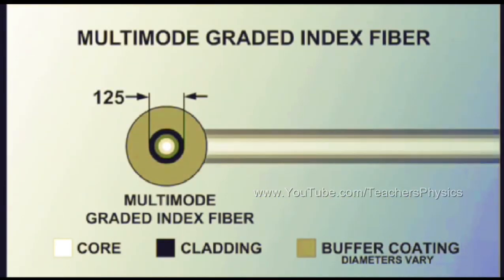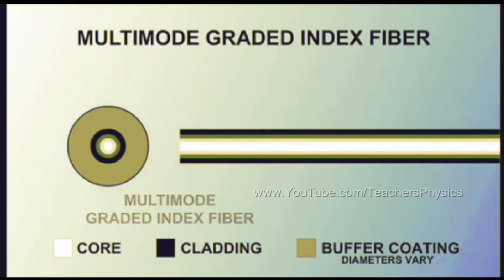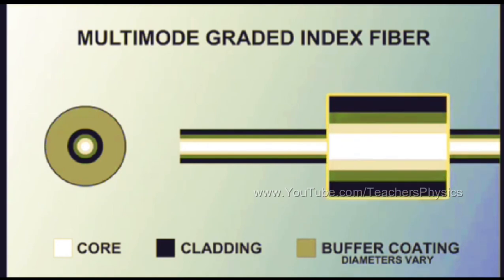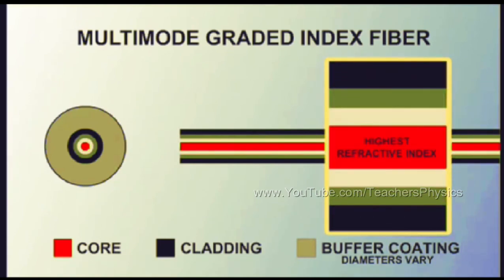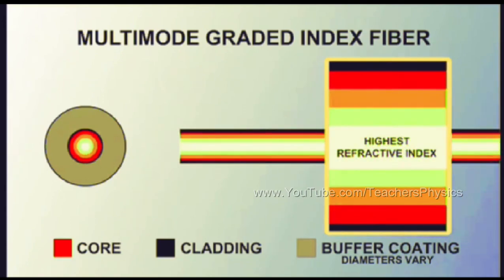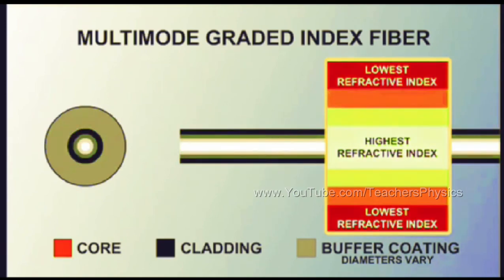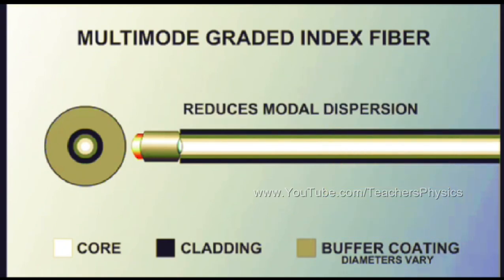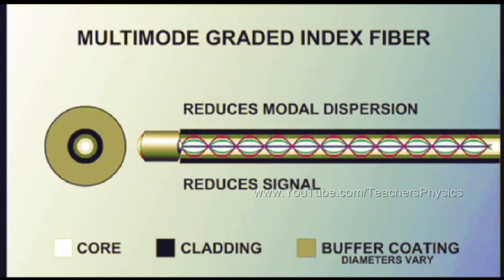Multimode graded-index fibers were developed to address the problem of modal dispersion. Graded-index fibers have their highest refractive index at the center of the core, and the refractive index declines gradually so that the value at the outer edge of the core equals the refractive index of the cladding. Since a higher refractive index means slower light, this design reduces modal dispersion by allowing light waves in the outer regions of the core to travel faster than those in the center, causing them to reach their destination simultaneously. This reduces signal loss.